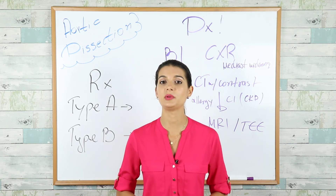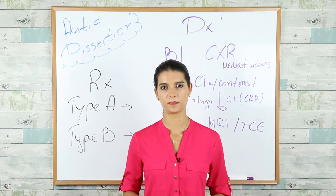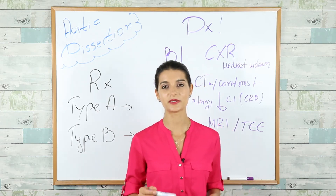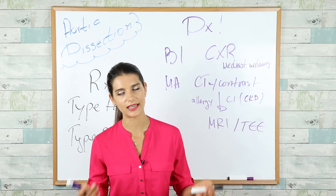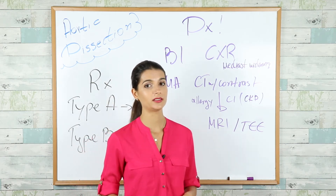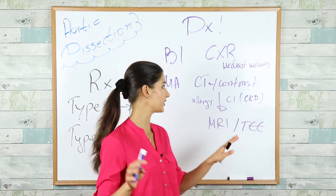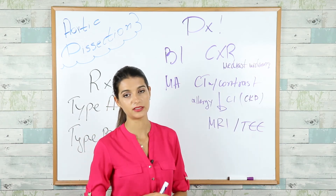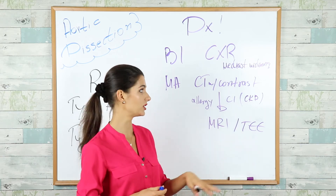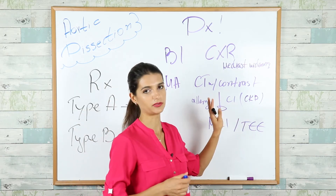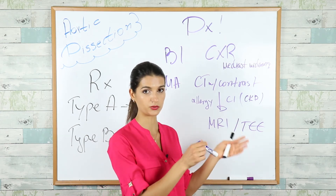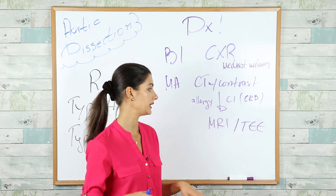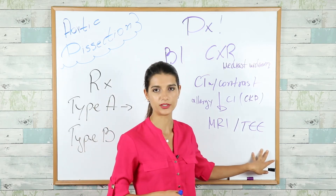To confirm the diagnosis, the best initial test is chest X-ray, where you'll see mediastinal widening. The most accurate test is CT with contrast. If the patient is allergic to contrast or has contraindications such as CKD with impaired kidney function, you can do either MRI or transesophageal echocardiography.